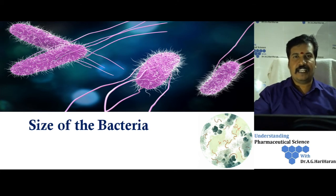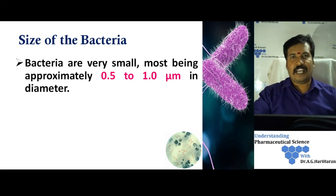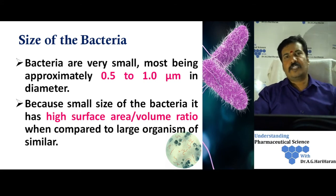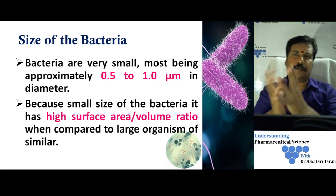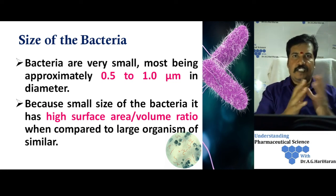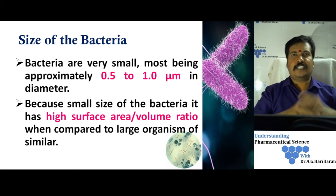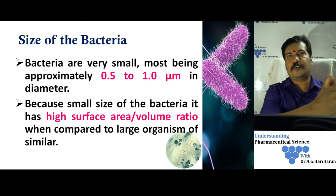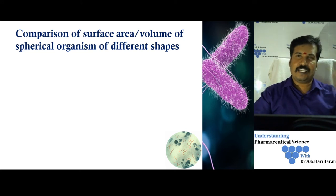The first characteristic is the size of the bacteria. The bacterial size generally ranges from about 0.5 to 1 micrometer in diameter, more or less spherical to some irregular shapes. This small size helps bacteria grow at a very fast rate compared to higher living cells, because of their high surface area-to-volume ratio. To illustrate this, we can examine a table comparing the surface area-to-volume ratio of various spherical-shaped organisms.